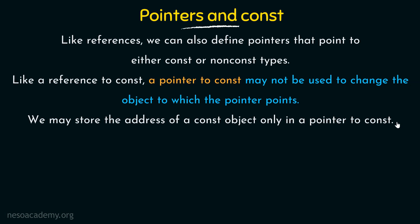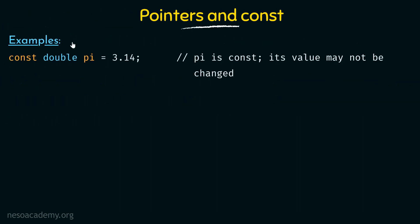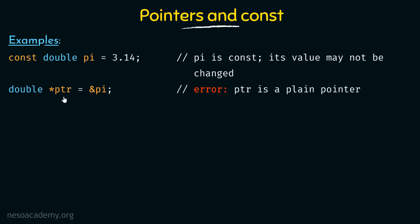Keeping these things in mind, let us take some examples. Here I am declaring a constant variable of type double called pi, initializing it with the value 3.14. Pi is a constant so its value may not be changed. Next, I am declaring a pointer called PTR of type double and storing the address of pi to it.